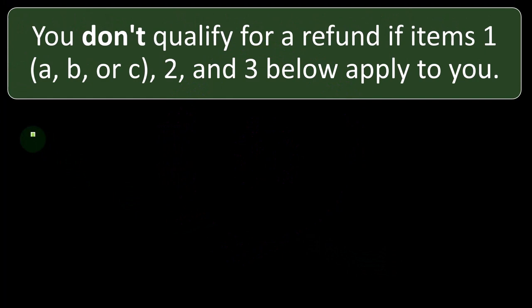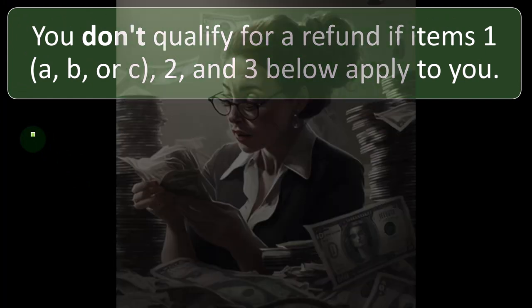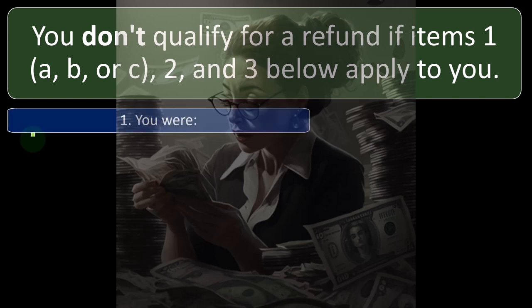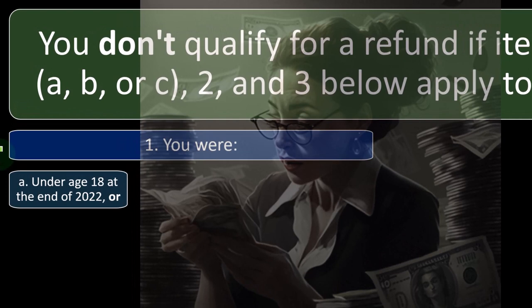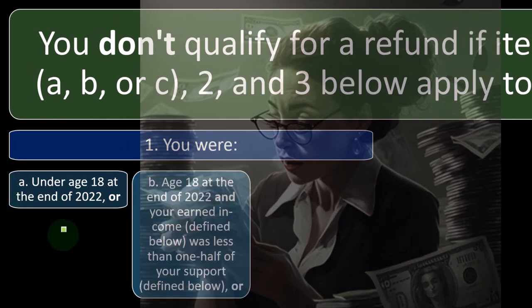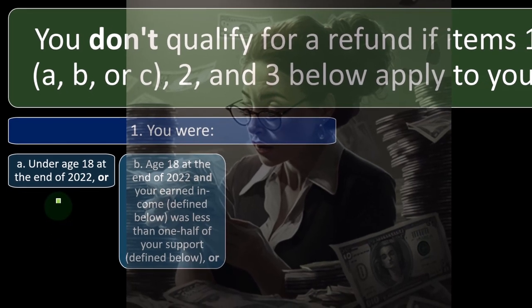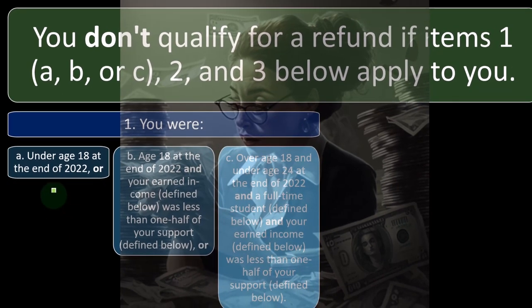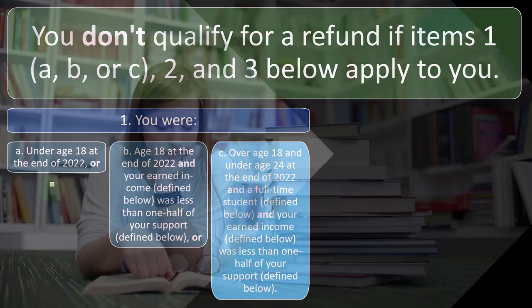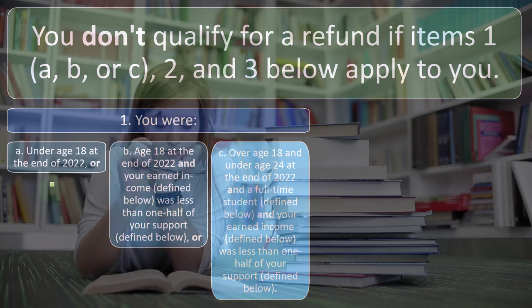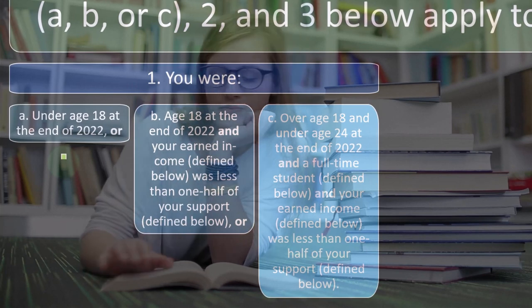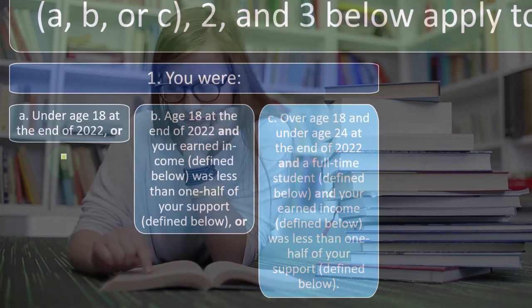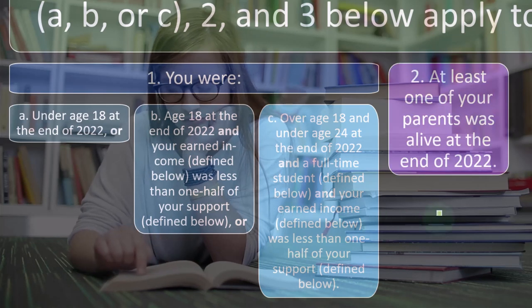You don't qualify for the refundable portion if items 1, 2, and 3 apply. Item 1: (A) you were under age 18 at the end of 2022, or (B) age 18 and your earned income was less than half your support, or (C) over 18 and under 24, a full-time student, and your earned income was less than one-half of your support — meaning you could potentially be claimed as a dependent.